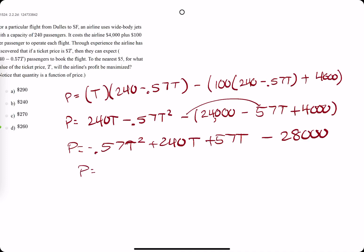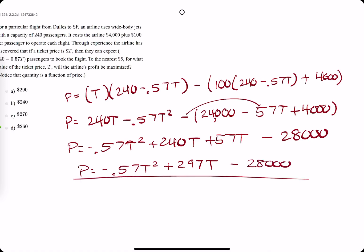We're almost there. Profit is equal to negative 0.57t squared. 240 plus 57 is plus 297t, minus 28,000. This is a quadratic opening downward.